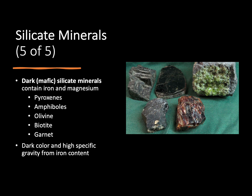On the opposite end of the spectrum, we have mafic silicate minerals. Instead of salty elements like sodium and potassium, these contain metallic elements like iron and magnesium. These metallic elements weigh a lot more than salt elements, so mafic minerals are heavier in weight, have a higher specific gravity, feel denser, and get a dark color from all that iron and magnesium. Common examples of mafic minerals include pyroxenes, amphiboles, olivine, biotite, and garnet.